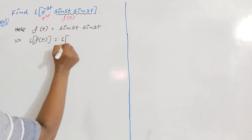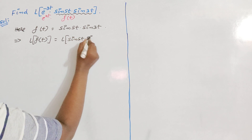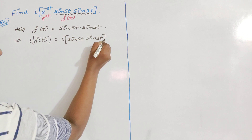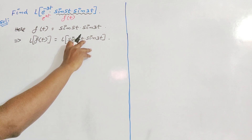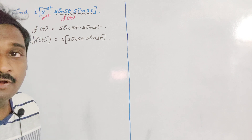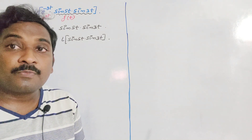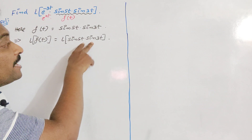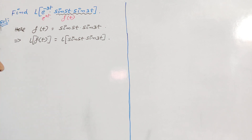What is the Laplace transformation of sin5t · sin3t? Since sin5t and sin3t are in product, we cannot apply the linear property — terms must be separated by addition or subtraction for linearity. That is why we apply the trigonometric transformation formulae.